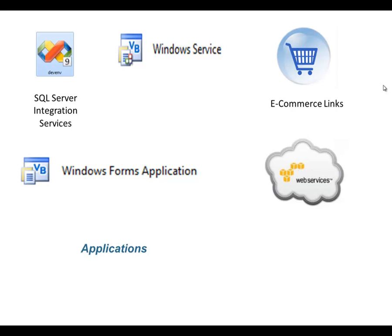There are many ways to use the .NET object library. For an unattended process, you could use SQL Server Integration Services with SQL 2008 R2 and build robust .NET applications that run as SQL jobs. You could also write an unattended process using a Windows service. We have many clients using our products as e-commerce links to pump transactions into Macola — creating orders and managing customers from a shopping cart. You could also build a Windows Forms desktop application, or people are building web services using Microsoft's development tools.